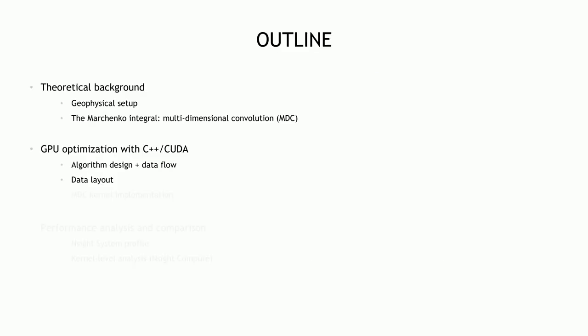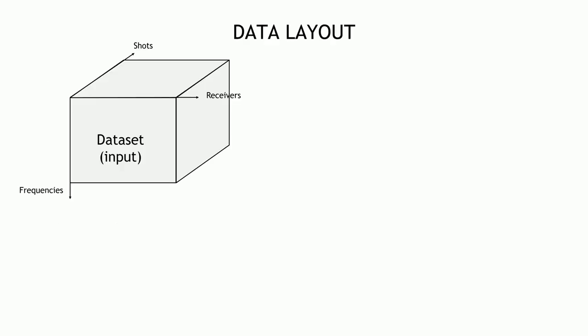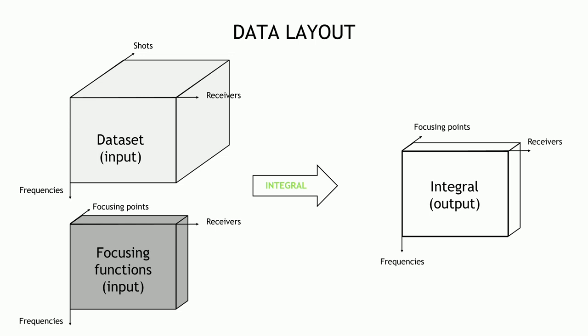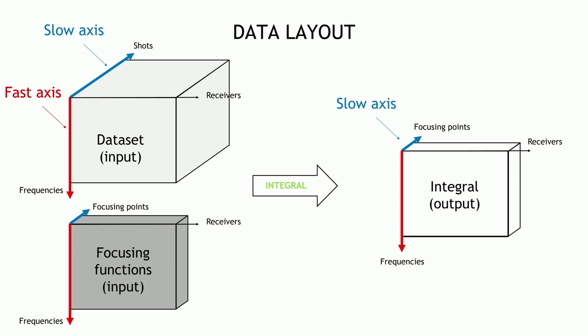Regarding data layout: the two inputs to the integral are the data, organized as frequency × receiver × shots, and the focusing functions, organized as frequency × receiver × focusing points. The output of the Marchenko integral for one iteration is a 3D cube: frequency × receiver × focusing points. The fast axis is frequency and the slow axis is either shots (for the data array) or focusing point (for the focusing function array).